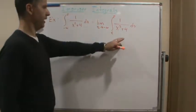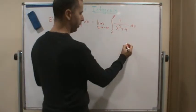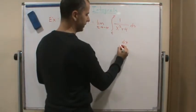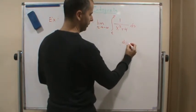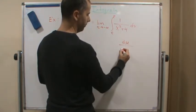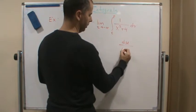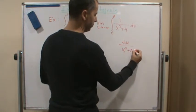Now recognize what the form is here. We've got the form du over u squared plus a squared, right?